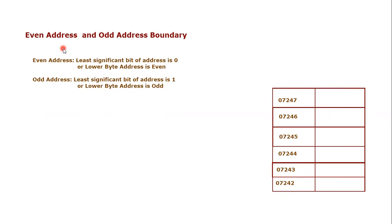Let's consider first of all what is even address boundary and what is odd address boundary. Even address boundary: you know that in the 8086 microprocessor every time you are fetching or storing information it is around 16-bit, because these are 16-bit processors. So if the least significant bit of the address is zero, whatever the information we are inserting at any address, that particular placement will be known as even address boundary.